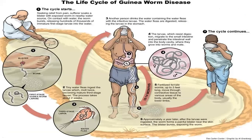Step 1: you can see a person sitting next to a water source. As this person has symptoms associated with blisters and eruptions on the leg, as a part of getting relief, this person might dip their leg into the water source. On contact with the water, the worm which has formed the blister will burst out first-stage larvae into the water. Or if that person enters into the water source, the blister formed by the adult worm carrying millions of larvae will release into the water.